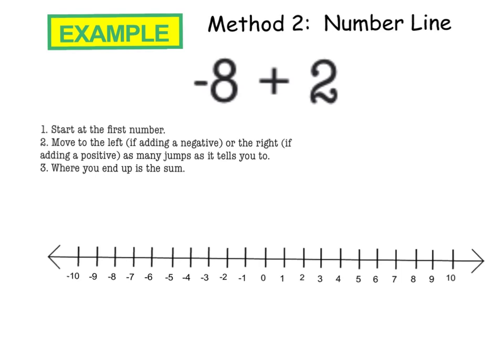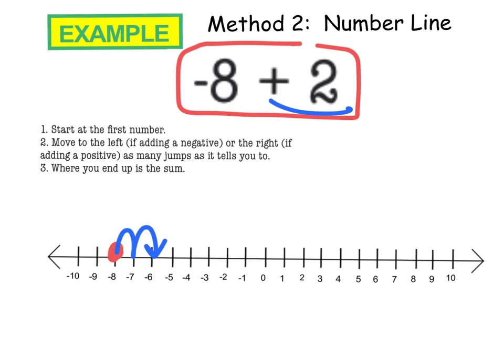Another method you'll have to be familiar with when adding integers is a number line. So if we wanted to add the same problem that we started with, negative 8 plus 2, I'm going to start at the first number. So what that means is I'm going to put a dot at negative 8. And then it says, this is important here, move to the left if you're adding a negative, or you go to the right if you're adding a positive. And you go as many jumps or as many numbers as it tells you to. So I see up here that I'm adding two and this is a positive, so I'm going to the right two spaces. And wherever I end up is my answer, and in this case it's negative 6.